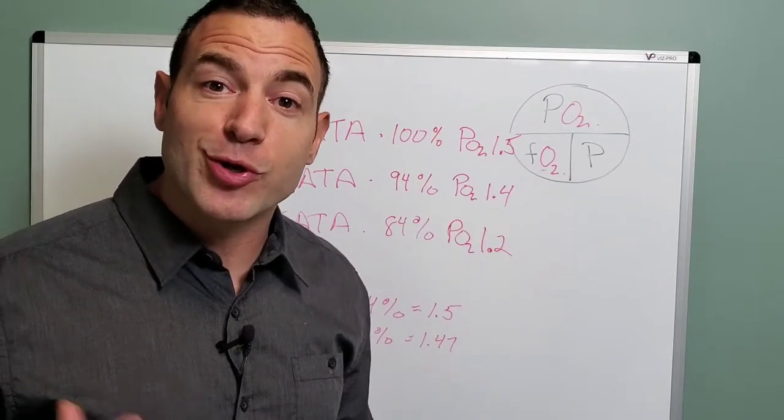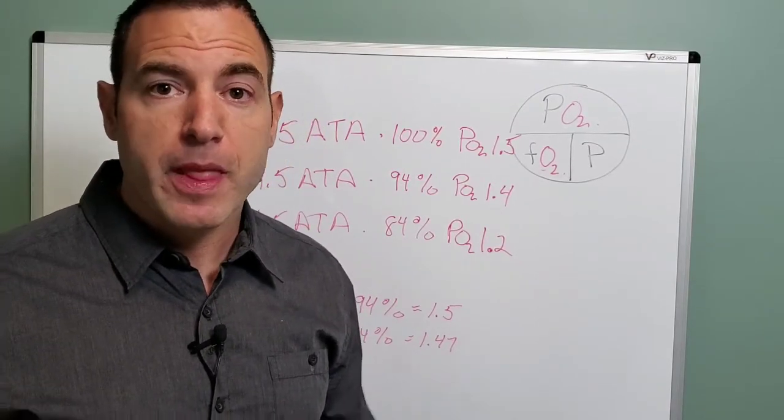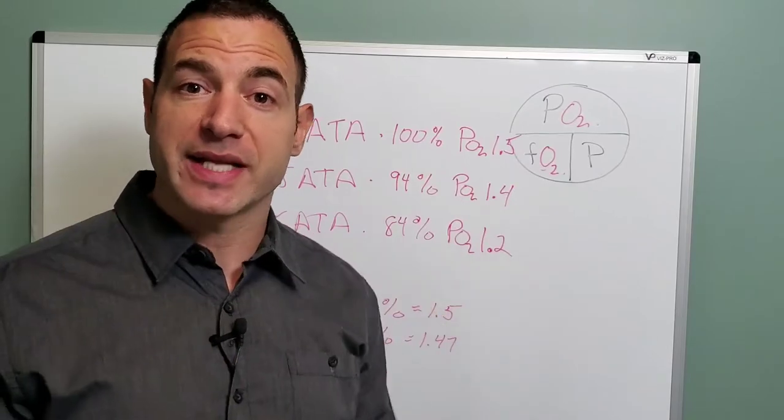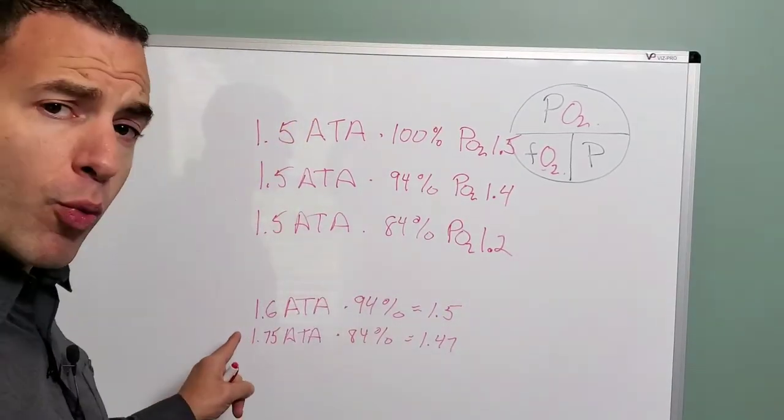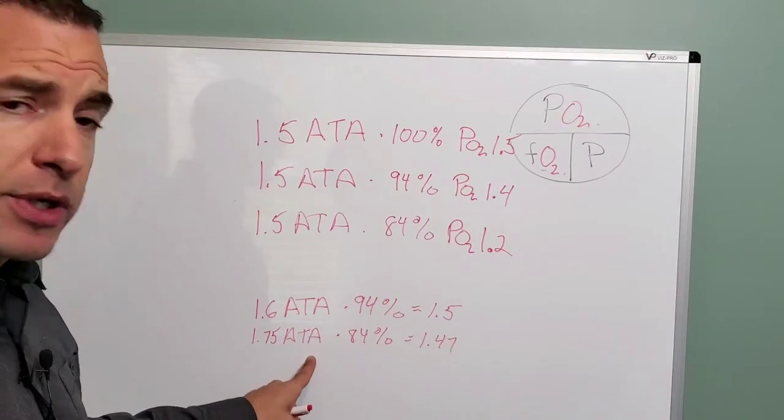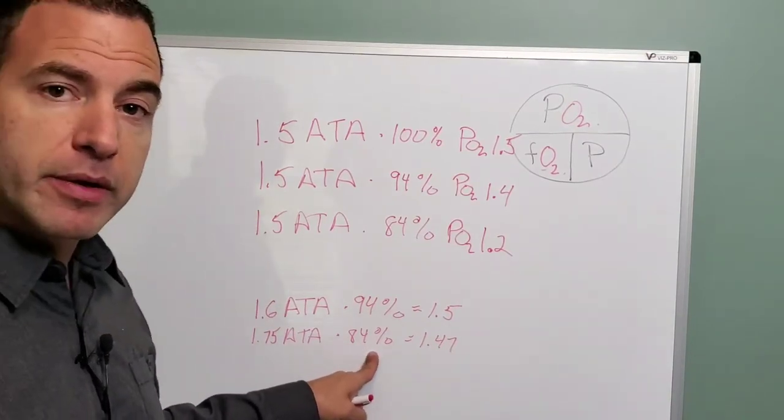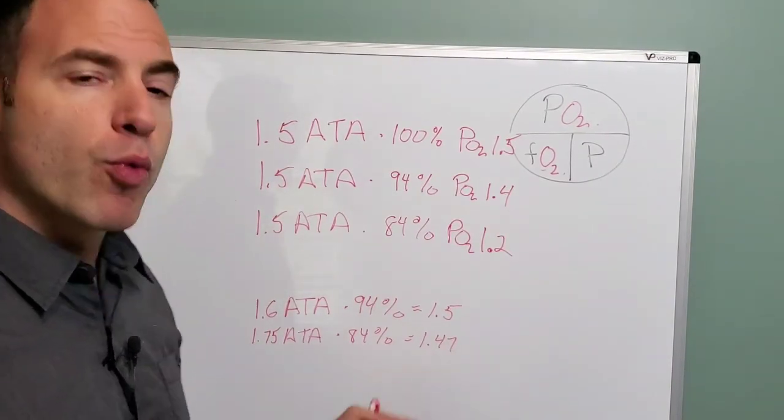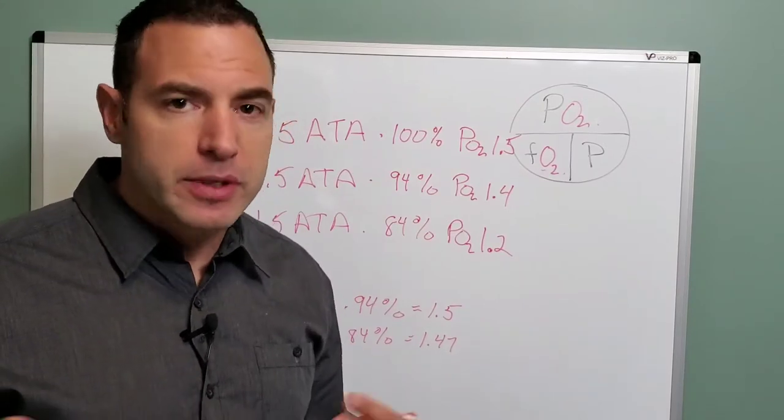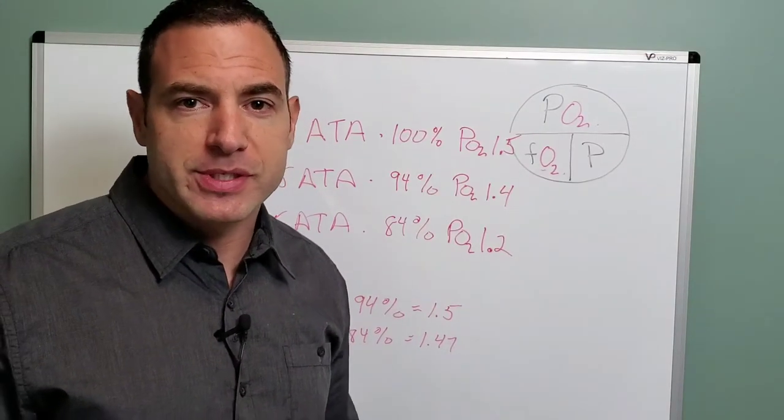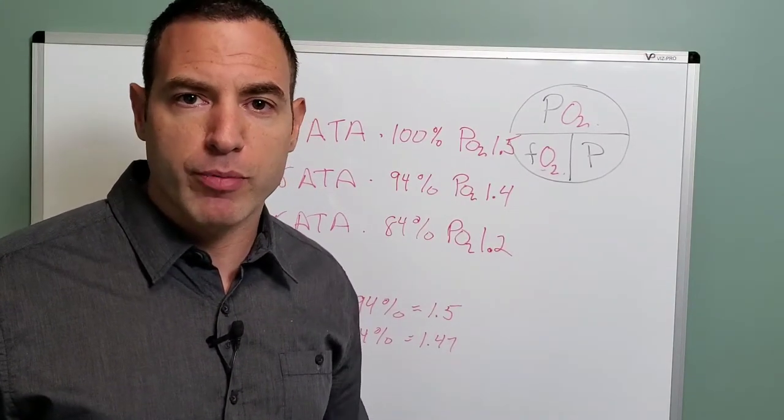Or let's say you're using an oxygen concentrator and you're using a non-rebreather that's getting 10% losses. Well, if you can go to 1.75 atmospheres at 84% oxygen, you can get 1.47, which for all intents and purposes is close enough to that 1.5.